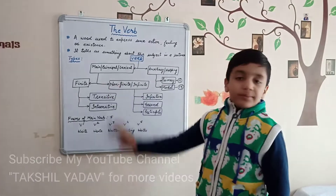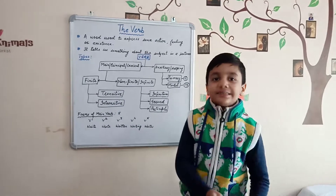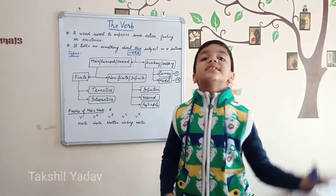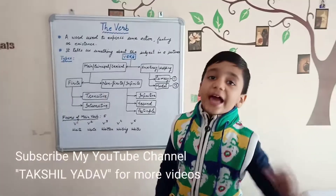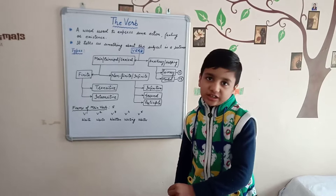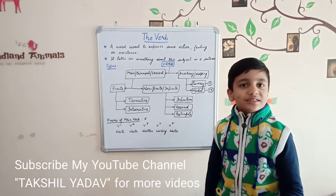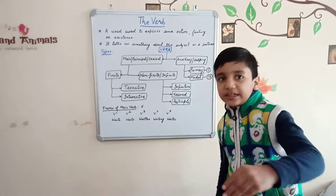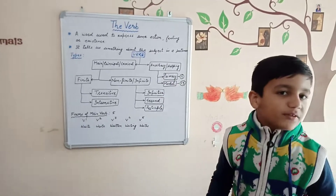Main verb is the important verb in a sentence that shows the action or being of a subject. It can stand alone in a sentence, or it can be accompanied by an auxiliary or helping verb.